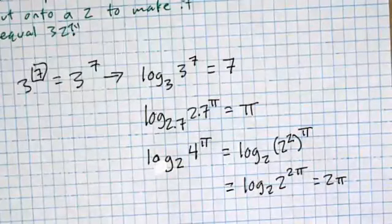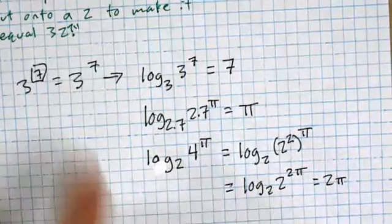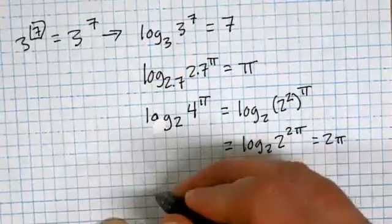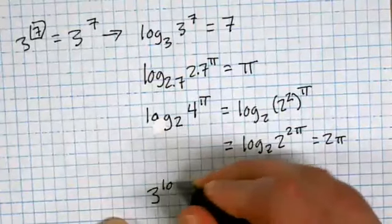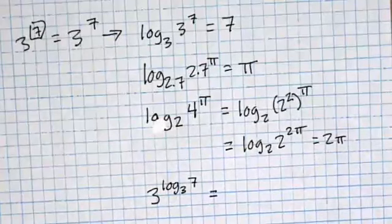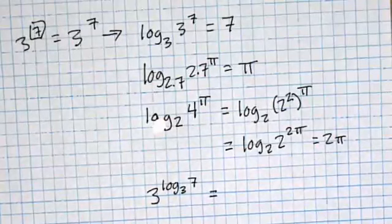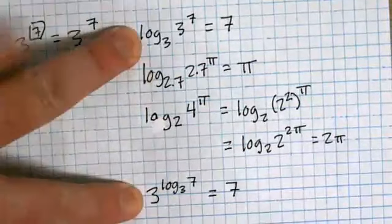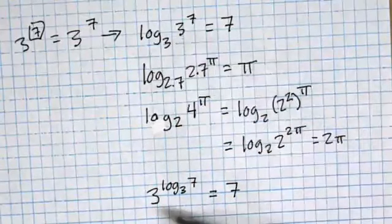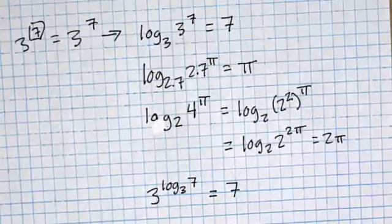They can get a little trickier, but the basic idea is: if your base matches, they cancel each other out. This also works the other way — if I took three to the log base three of seven, what would that equal? For the same reason, when the exponential is inside the log or the log is inside the exponential, if the bases are the same, they cancel each other out.